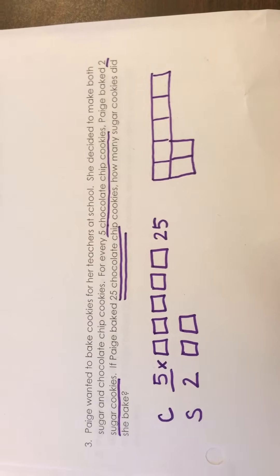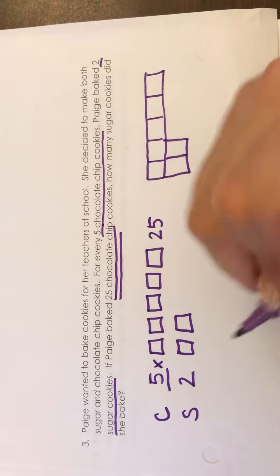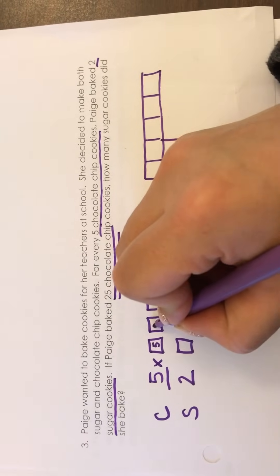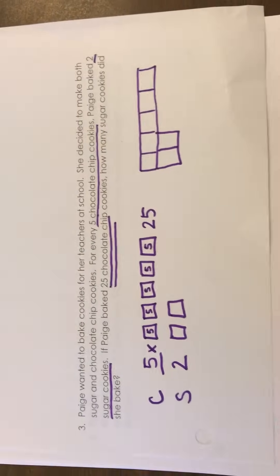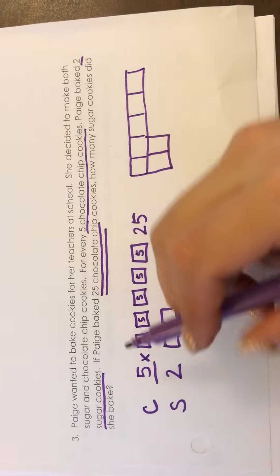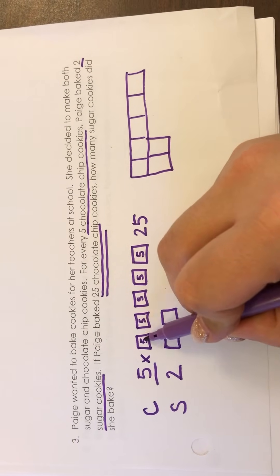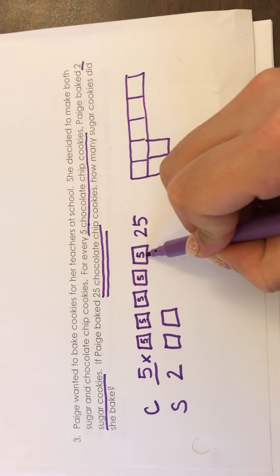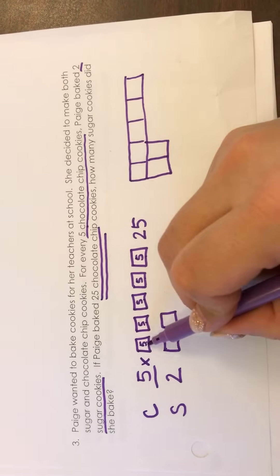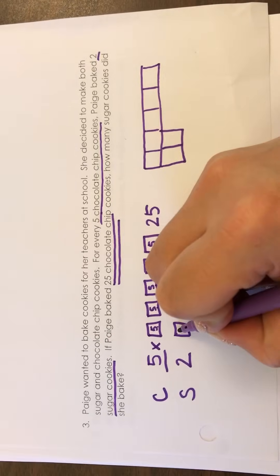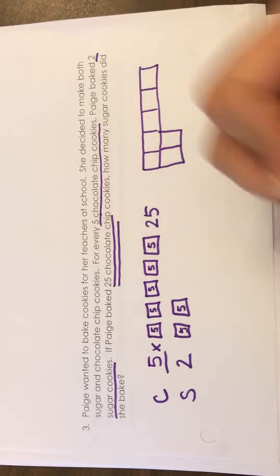So five times something will give me 25. I know that that's going to be a five. So in every box I'm going to put a five. And now I can see if I counted these up 5, 10, 15, 20, 25 that would give me my 25 chocolate chip cookies. Now since I put five in these boxes I'm also going to put a five in this box and this box.